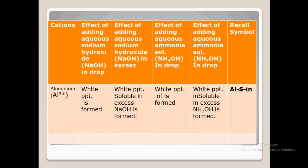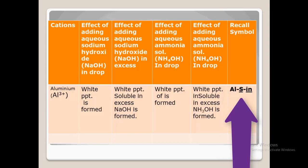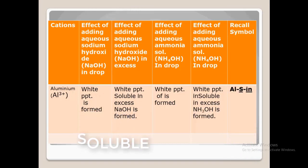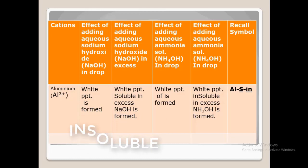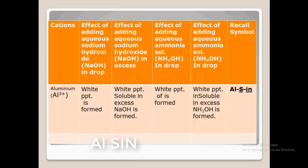Now let's look at the memory recall. You have ALSIN: AL stands for aluminum, the S stands for soluble in excess of sodium hydroxide, and the IN stands for insoluble in excess of ammonia solution. If you can pronounce ALSIN, you've already had a memory recall for this test — aluminum forms a white precipitate, soluble in excess sodium hydroxide and insoluble in excess ammonia solution.